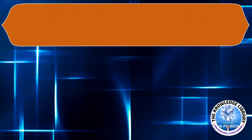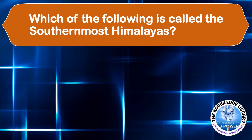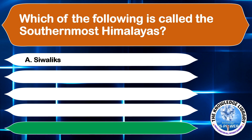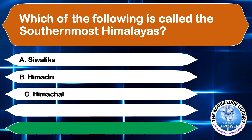Which of the following is called the southernmost Himalayas? A. Shivaliks, B. Himadri, C. Himachal, or D. None of the above. The correct answer is option A, Shivaliks.